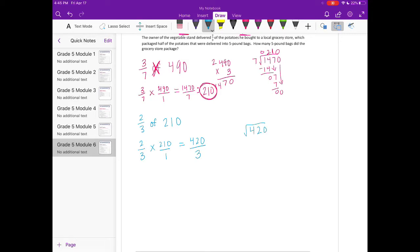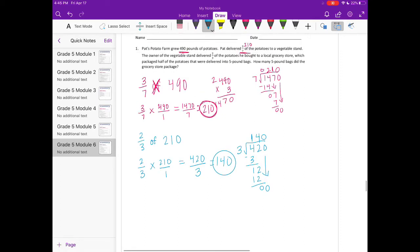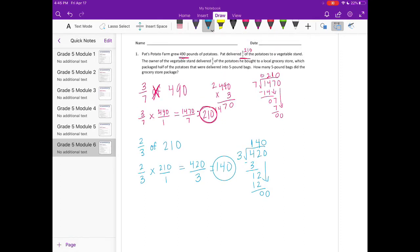3 goes into 4 one time. 3 goes into 12 four times. 0; 3 can't go into 0, so we have to put our zero up there, and there's no remainder, so this is equal to 140 potatoes.